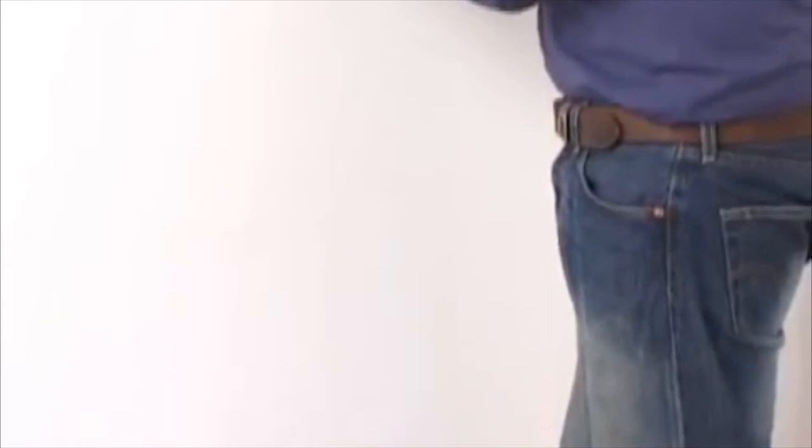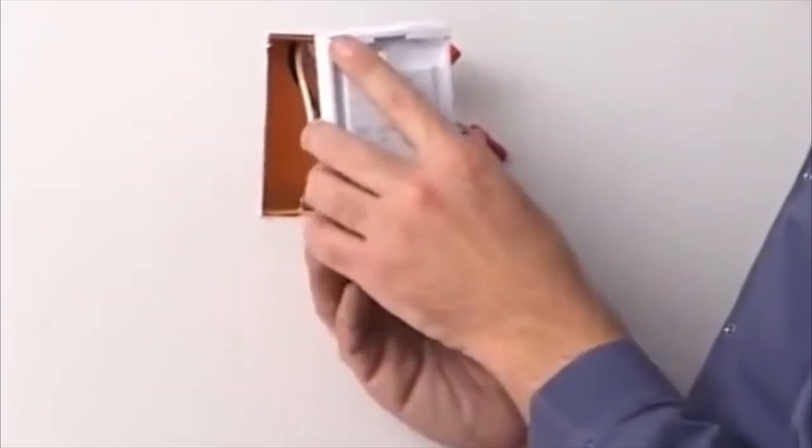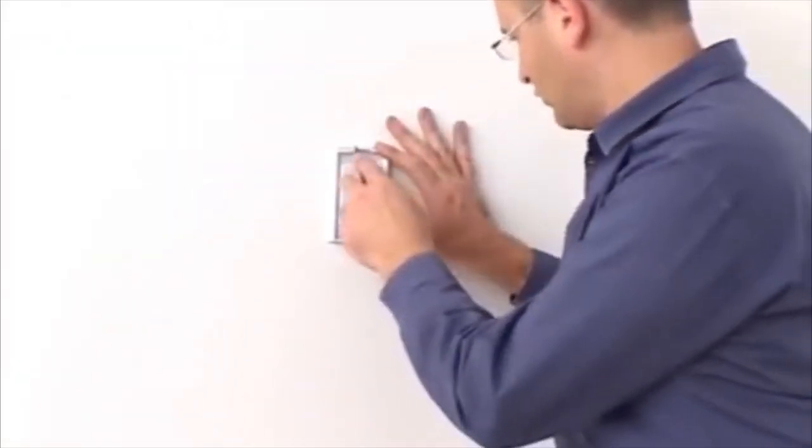In the thermostat box, connect the wires to the control thermostat according to the wiring diagram in the installation manual and install the thermostat.